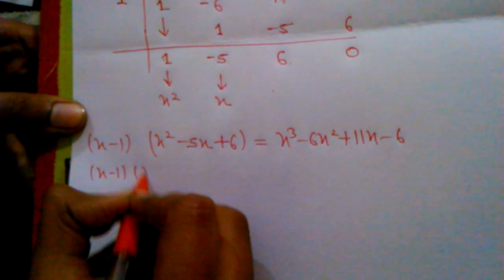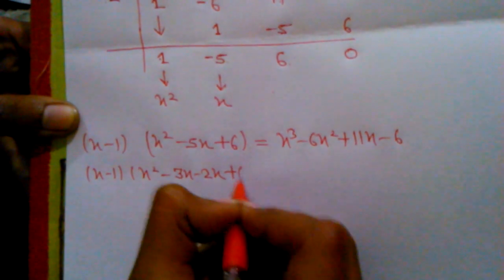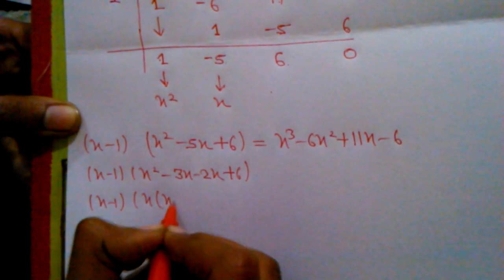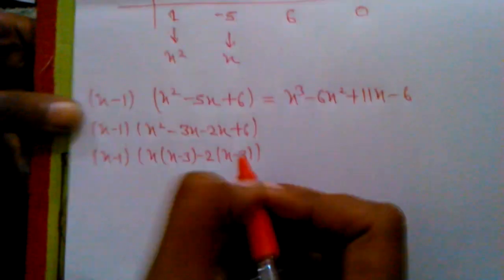And, x² - 5x + 6, we can write -5x as -3x - 2x, giving x² - 3x - 2x + 6. Factoring, x(x - 3) - 2(x - 3), so (x - 2)(x - 3).